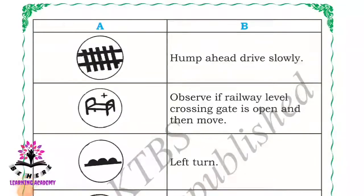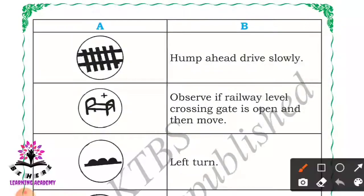Some traffic signals and instructions are given - match them by drawing a line. See the first one in column A. It is a railway crossing sign. You have to match it to: observe if the railway level crossing gate is open, and then move.